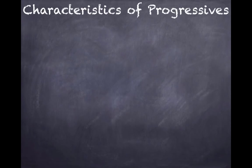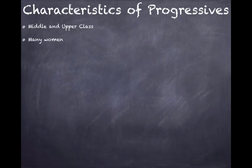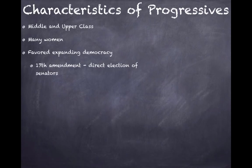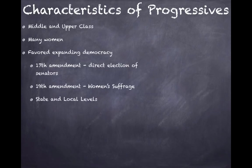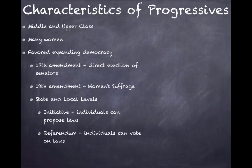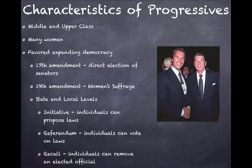Characteristics of Progressives is something you will absolutely, positively have to know and be able to identify and explain in a short answer if necessary. They tended to be middle and upper class, many women, and they favored expanding democracy. The 17th Amendment is the direct election of senators, and the 19th Amendment is women's suffrage — done on a national level. On state and local levels, you have the initiative, where individuals can propose laws; referendum, where individuals can vote on laws; and recall, where individuals can remove an elected official. That's how Arnold Schwarzenegger became governor of California, because Gray Davis was recalled.